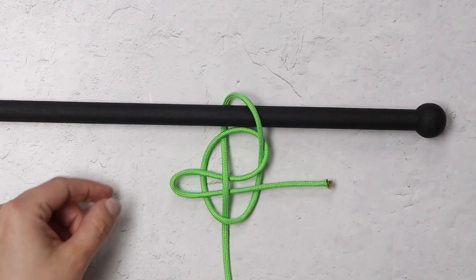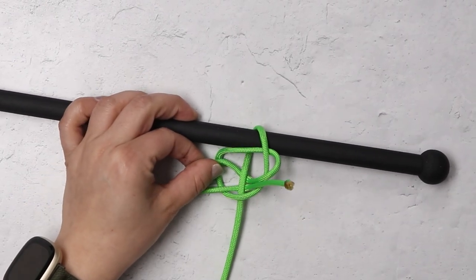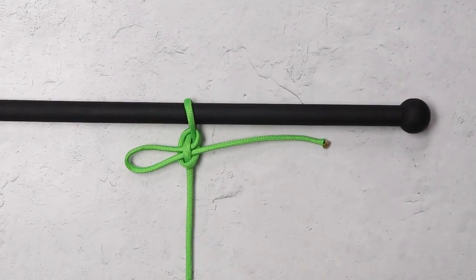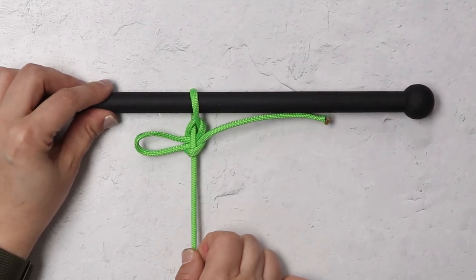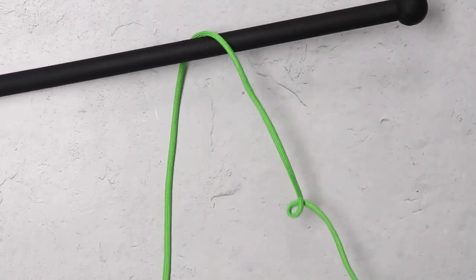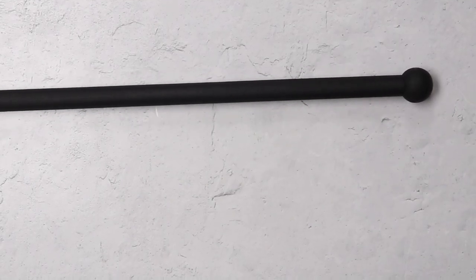And then you can just tighten that side up to create your quick release hitch. And again the mooring hitch can be released by pulling on the tail end that is sticking out of that last loop that you made.